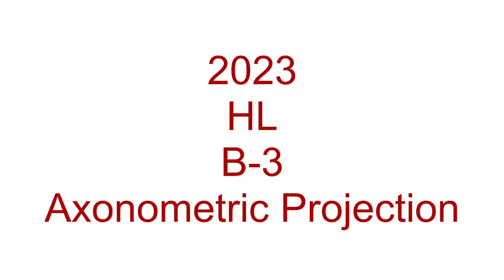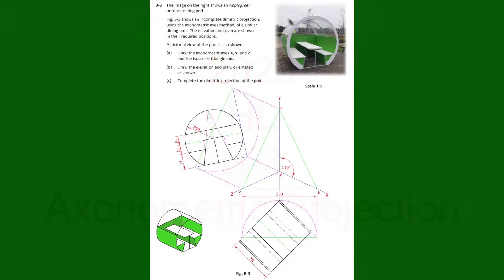This video relates to the 2023 higher level question B3, which is an axonometric projection question. The image on the right shows an apple green outdoor dining pod. Figure B3 shows an incomplete diametric projection using the axonometric axis method of a similar dining pod. The elevation and plan are shown in their required positions. We are asked to do three things: Part A is to draw the axonometric axis X, Y and Z and the isosceles triangle ABC. Part B is to draw the elevation and plan orientated as shown. And part C is to complete the diametric projection of the pod.